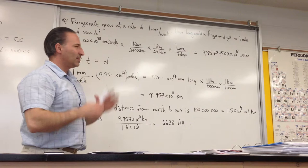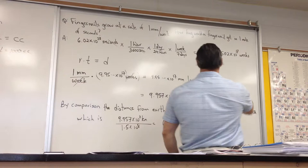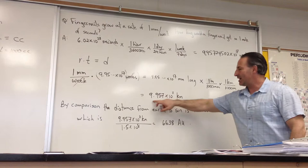so let's convert it to kilometers. We'll divide by 1,000 millimeters per meter, and we'll divide by 1,000 meters per kilometer, and we get 9.95 times 10 to the 11 kilometers.